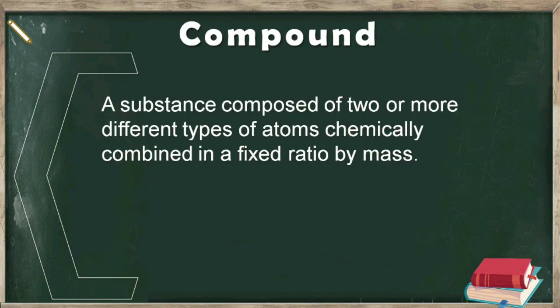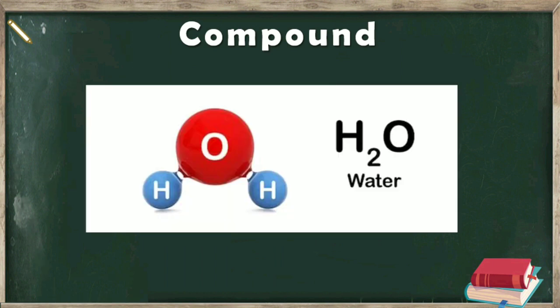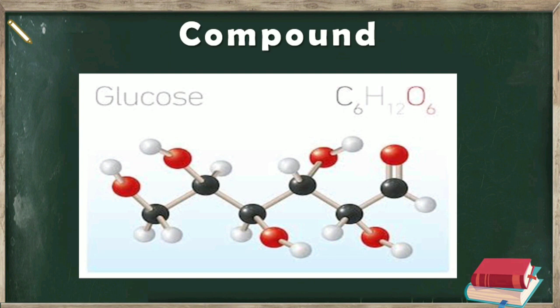A compound is a substance composed of two or more different types of atoms chemically combined in a fixed ratio by mass. For example, water is composed of two different types of atoms, hydrogen and oxygen, combined in a fixed ratio by mass, so it is a compound. Also, glucose is made up of three different types of atoms: carbon, hydrogen and oxygen, so it is also a compound.